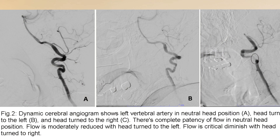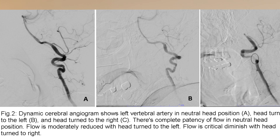During the cerebral angiogram, the patient is asked to turn their head to one side. The patient may become symptomatic, and contrast injection can reveal lack of flow or critical stenosis in the vertebral artery. The flow returns when the patient brings their head back to neutral position. When the head is turned to the contralateral side, symptoms should not be present. This is how the diagnosis is confirmed.